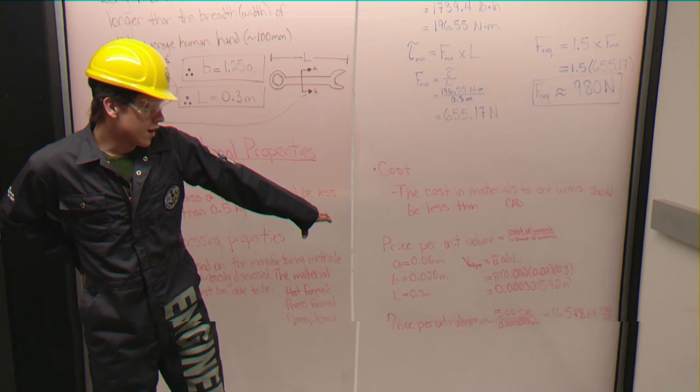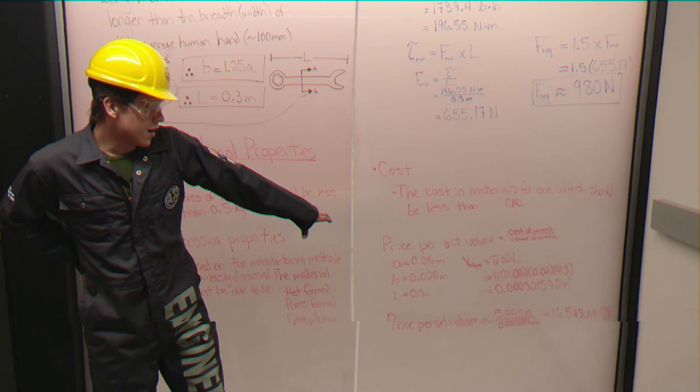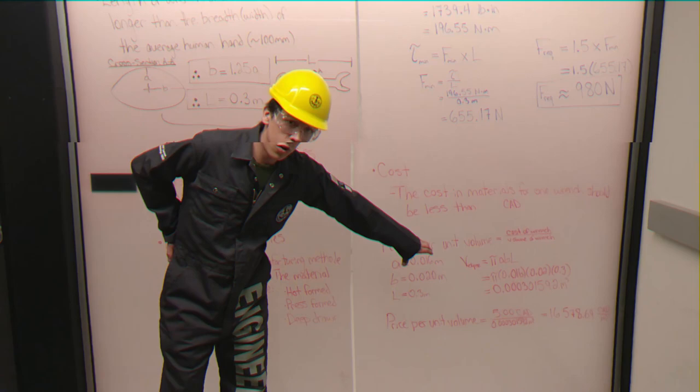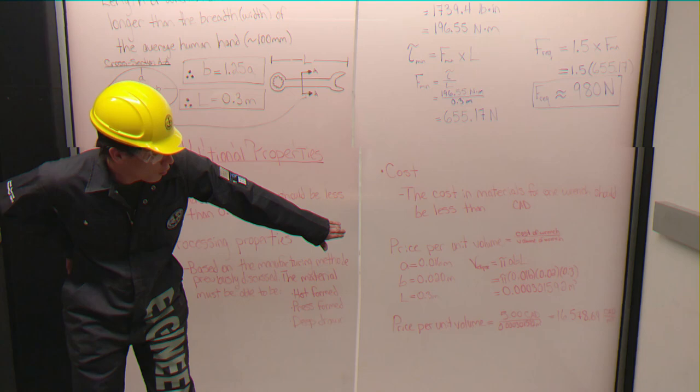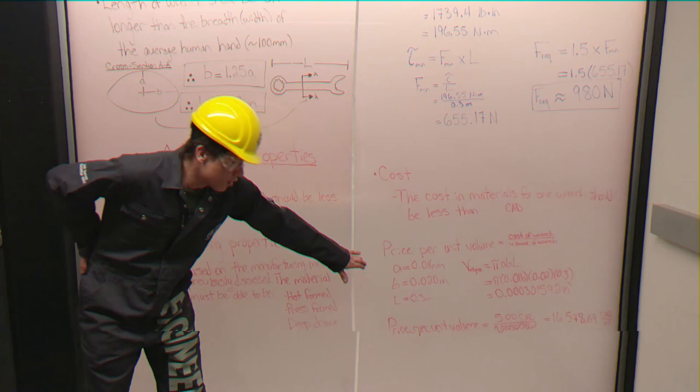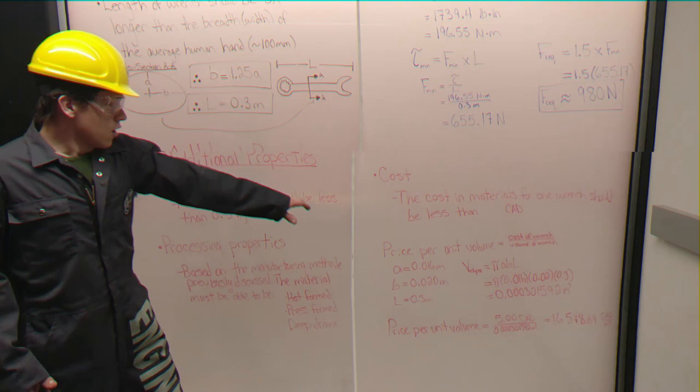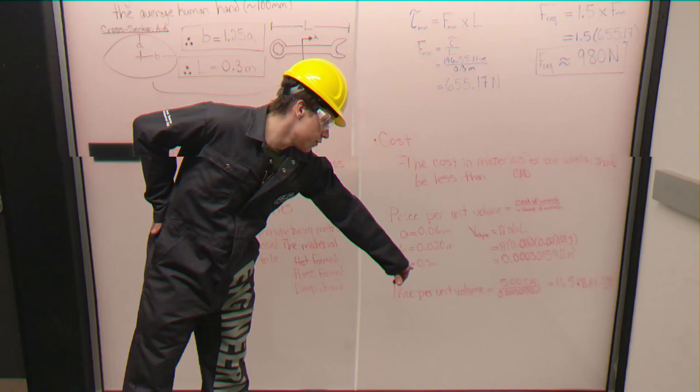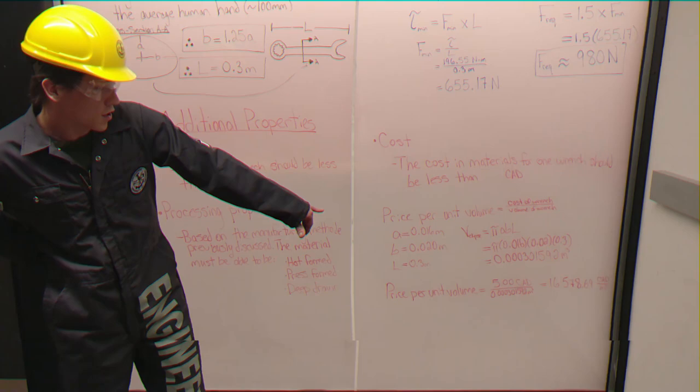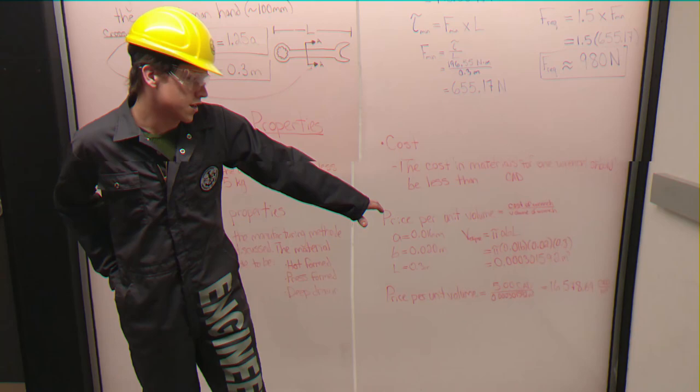Then we calculated in the price per unit volume, which we then have to calculate the volume of our wrench. So we decided on the 1 to 1.25 ratio, having our radial height at 0.016 meters, which then would give us a 0.02 meter radial width. And then our constrained length at 0.3 meters gives us approximately 0.0003 cubic meters. We divide that by our five Canadian dollars per 0.0003 meters cubed, and that gives us approximately 16,600 Canadian dollars per meter cubed.